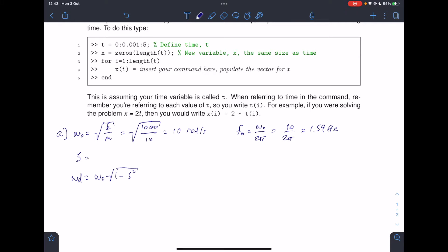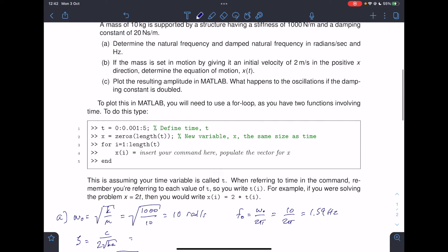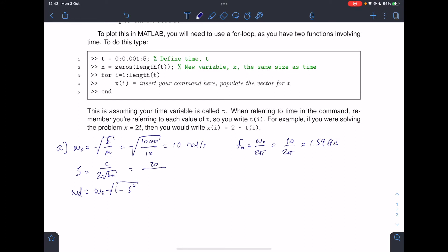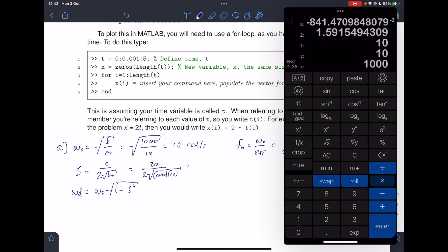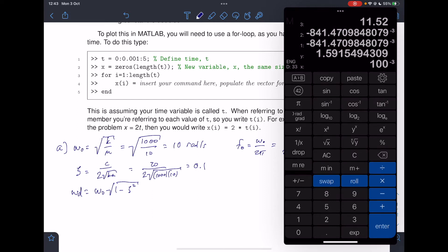Zeta is c divided by 2 root km. So we've got 20 divided by 2 times the square root of 100 times 1,000. If we do the sums for that, we get 0.01 as the damping ratio.